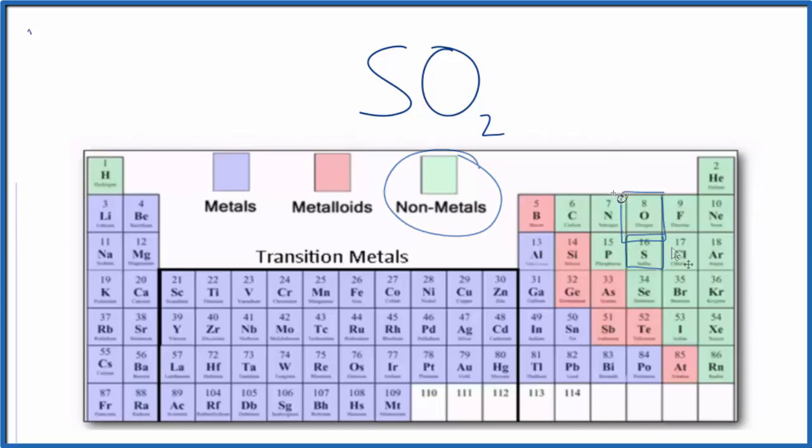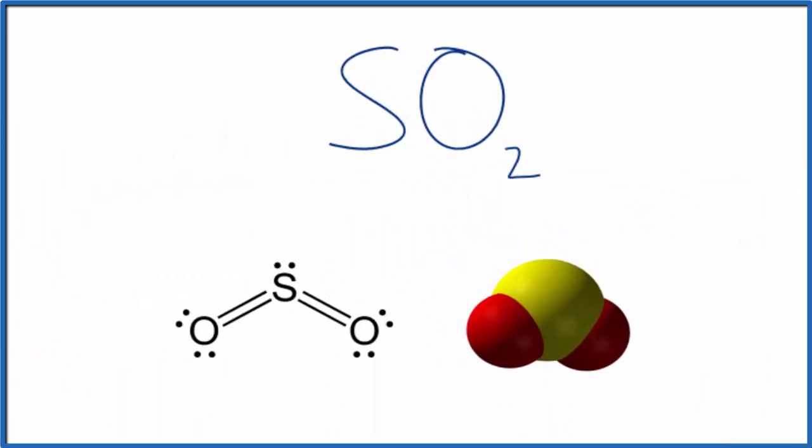Let's take a look at the Lewis structure for SO2. And we note that the sulfur, we see these two lines here. Each line is considered a bond, so this is a double bond and it's a covalent bond.